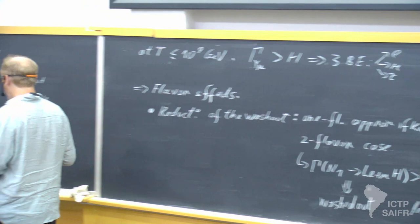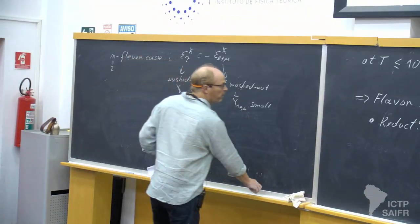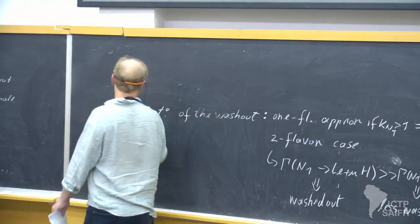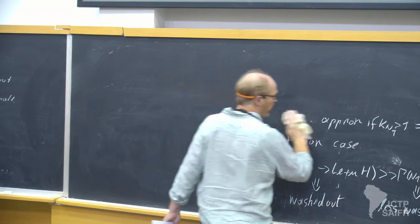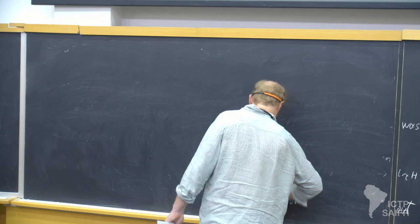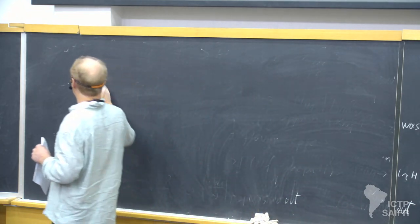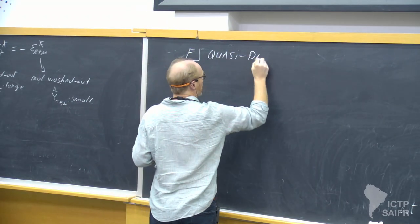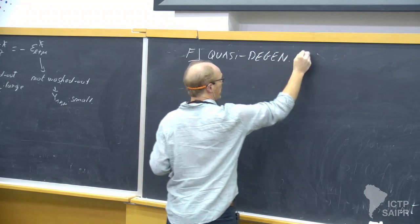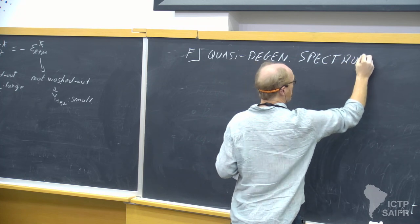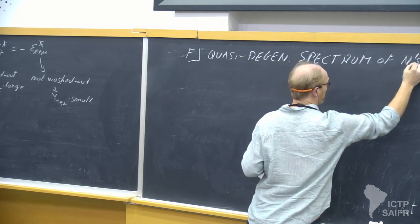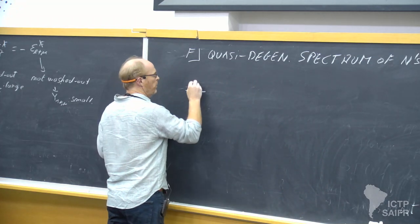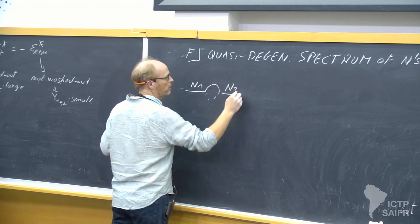Now let's go to the next section: what happens when the right-handed neutrinos have similar masses — a quasi-degenerate spectrum of right-handed neutrinos. We have seen that we have a self-energy diagram, and when you compute the CP asymmetry it gives (1/(8π)) · Im(Y_ν†Y_ν)²_{12} / (Y_ν†Y_ν)_{11} times (MN1/MN2) times the factor S12.